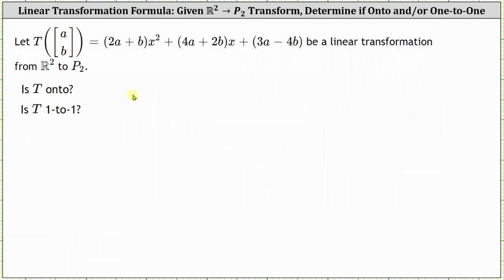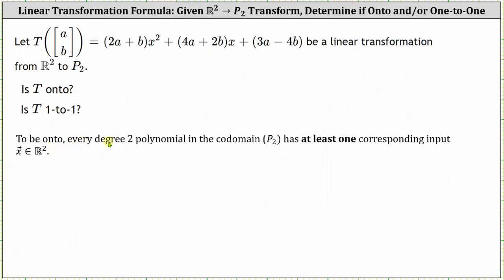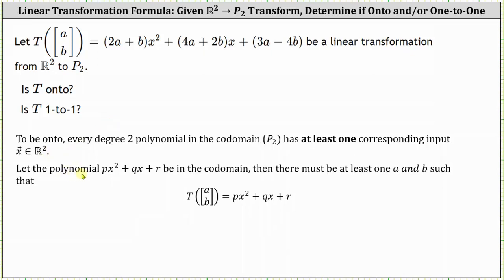Let's start with onto. To be onto, every degree-two polynomial in the codomain P2 has at least one corresponding input vector x in R2. To test for this, let the polynomial Px² + Qx + R be a polynomial in the codomain. Then there must be at least one A and B such that the transformation of vector [A, B] equals Px² + Qx + R.